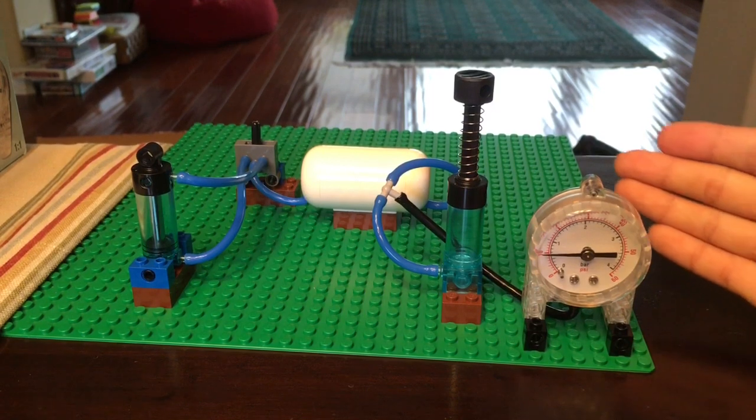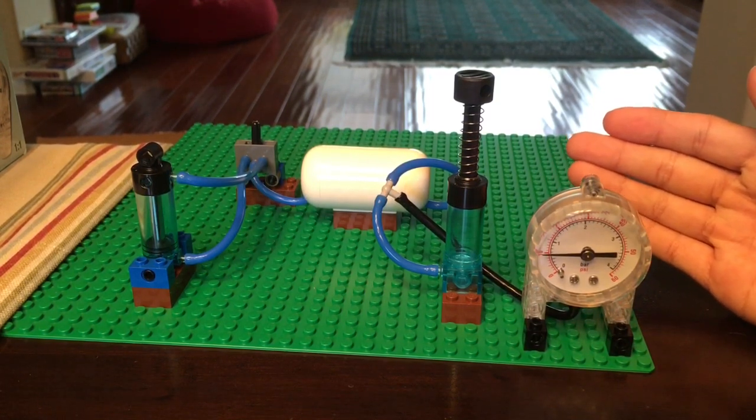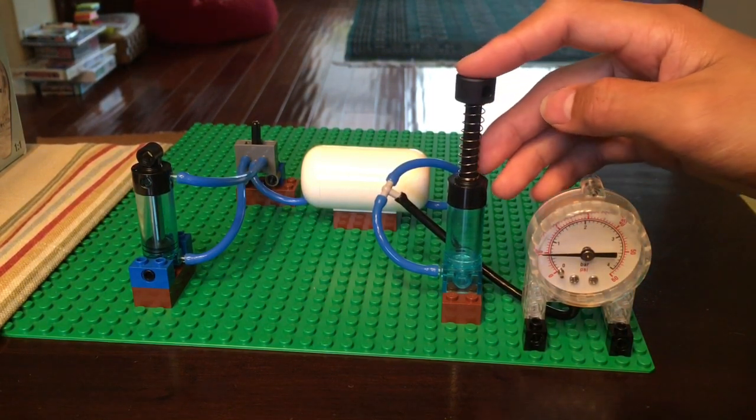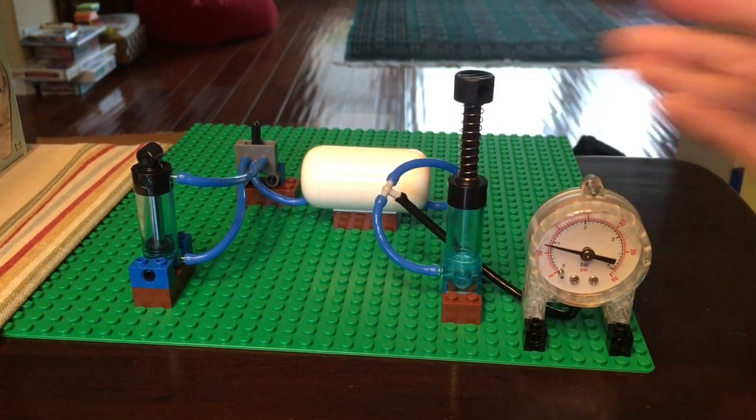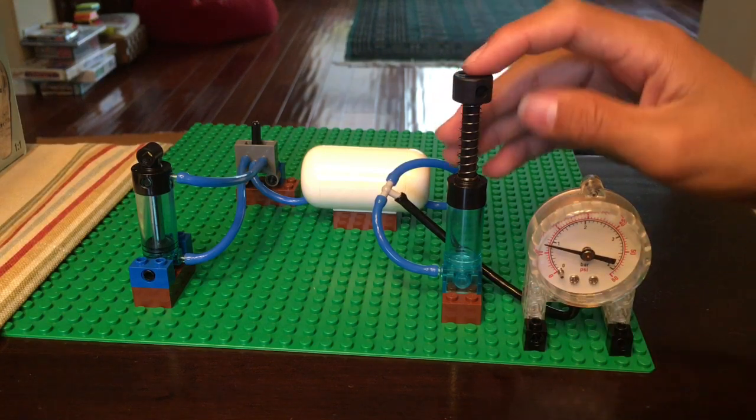So what the pressure gauge does, it measures the air or pressure that you have pumped in psi. So as you can see, when we keep pumping more air, the bar on the pressure gauge will keep going up.